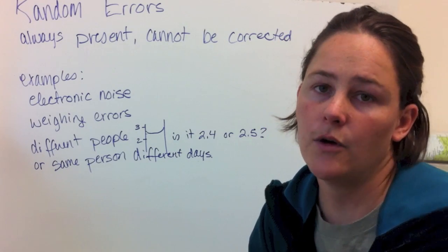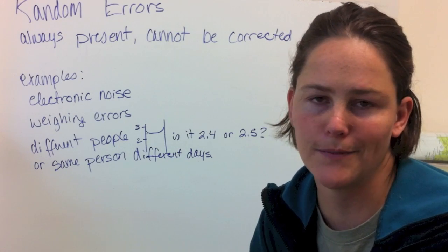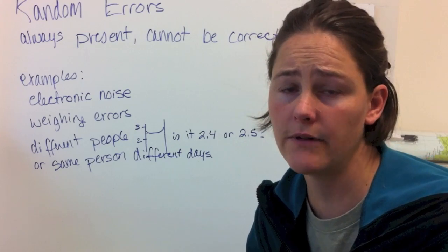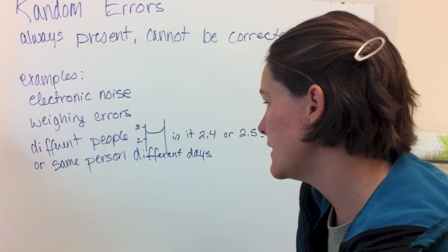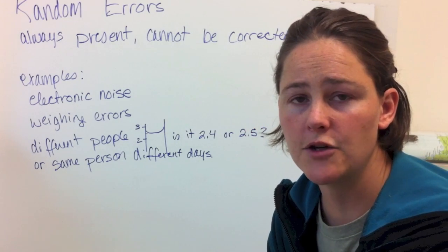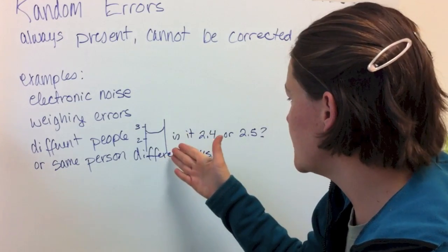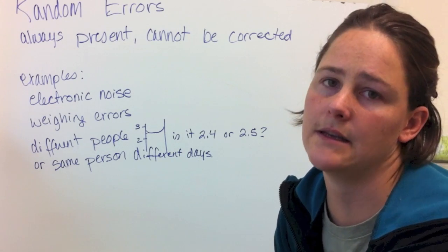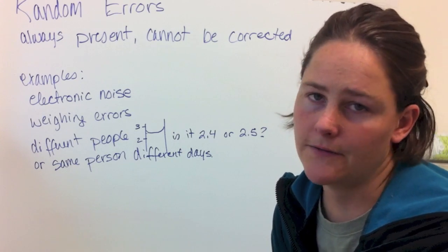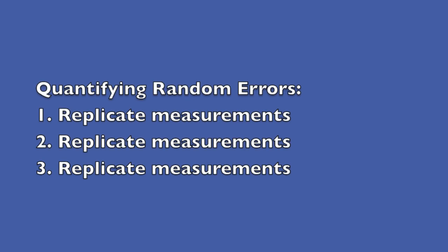So, random errors on the other hand are always present and can't be corrected. We do stuff like weigh something a bunch of times so that we could try to quantify the random errors. But they result from stuff like electronic noise, weighing errors, having different people make measurements or having the same person on different days making measurements. And is this 2.4 or 2.5? I don't know. Those are the types of things that are random errors. You can't really correct for that. You can try to be as consistent as possible, but there's still errors. All measurements are still affected by random errors.